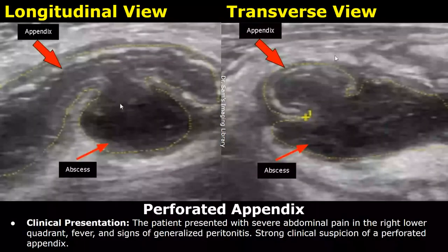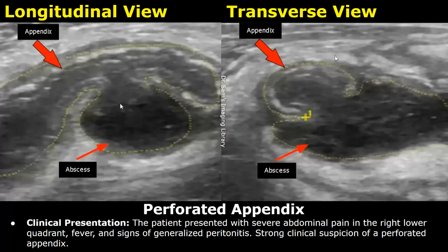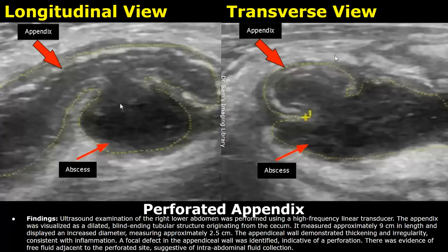Here is a case of a perforated appendix. This is the clinical presentation. There was severe abdominal pain in the right lower quadrant, fever, and signs of generalized peritonitis. There was a strong clinical suspicion of a perforated appendix. These are the findings.